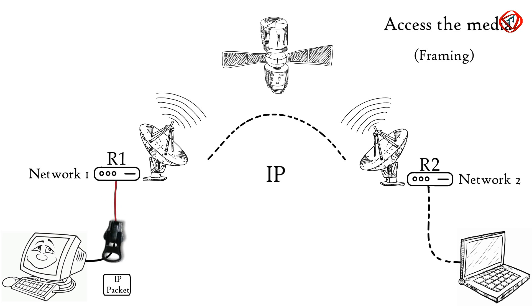Based on the medium used to connect desktop and router R1, data link layer adds some data in the head and tail of the IP packet and converts it to a frame, ethernet frame in this case.